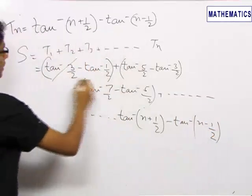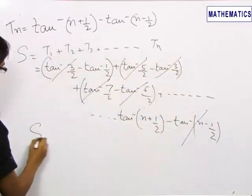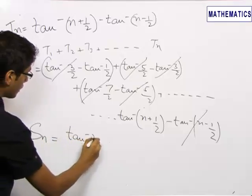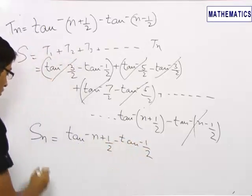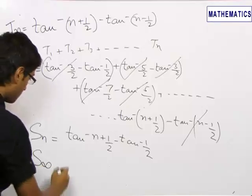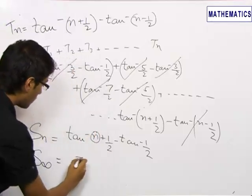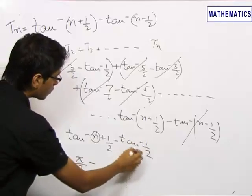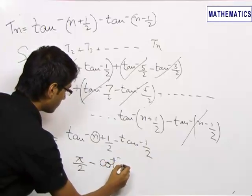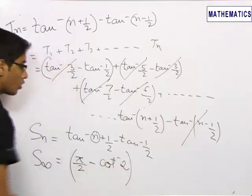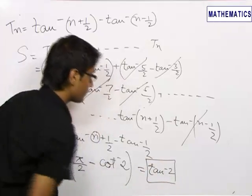We can very clearly see that the intermediate terms are getting cancelled, so the sum Sₙ reduces to tan inverse of (n + 1/2) minus tan inverse of 1/2. To find the sum up to infinite terms, putting n → ∞ gives tan⁻¹(∞) = π/2. Then tan⁻¹(1/2) can be written as cot⁻¹(2), so the final answer is π/2 − cot⁻¹(2) = tan⁻¹(2).